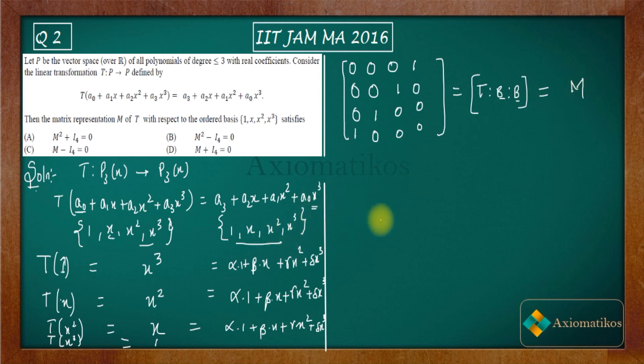Now if you square this M, try to do this calculation yourself, you will get identity matrix of order 4. That means M² minus I₄ is actually 0.